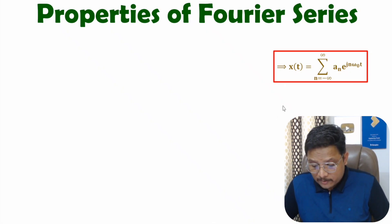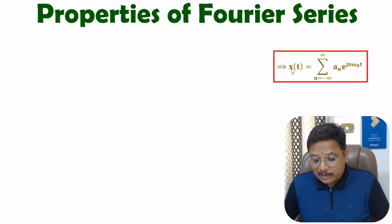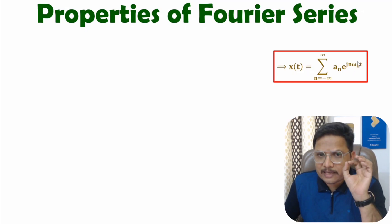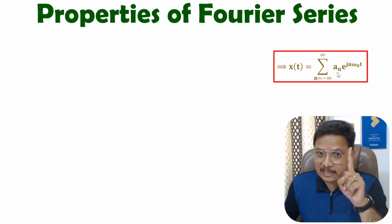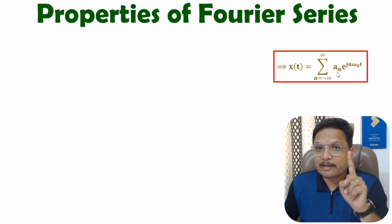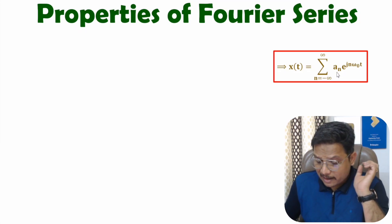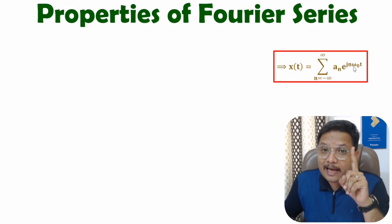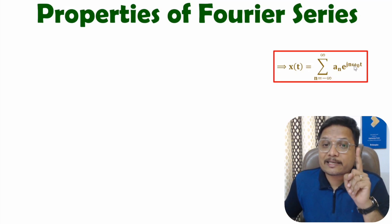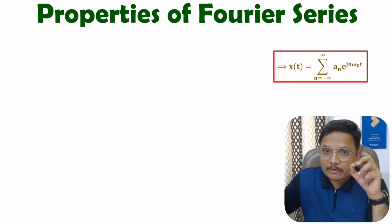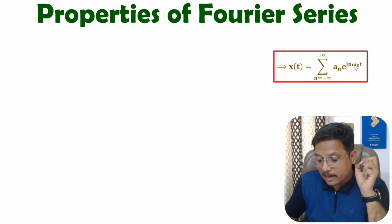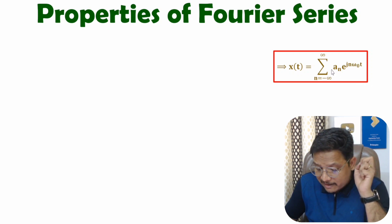In exponential Fourier series, if you have signal x(t) in the time domain, then in terms of frequency domain, Fourier series will be a summation where n ranges from minus infinite to plus infinite of a(n) into e to the power jnω₀t. Here, a(n) is the Fourier series coefficient that describes the magnitude of the frequency component, and n times ω₀ describes the frequency of the given spectrum. For a given particular frequency, the magnitude is described by a(n).